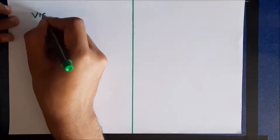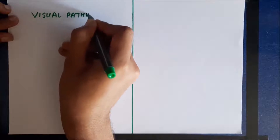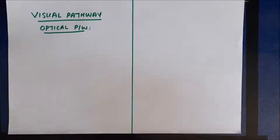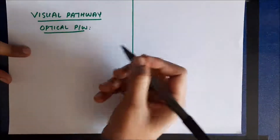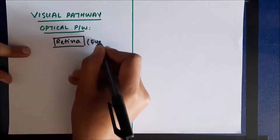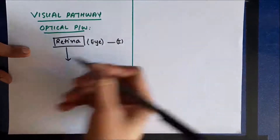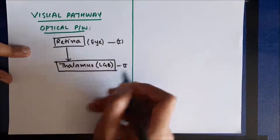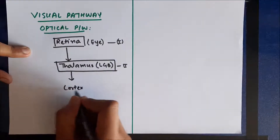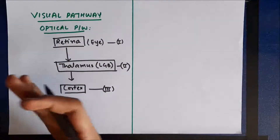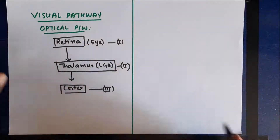In this section we are going to discuss the last topic of physiology of vision, which is known as the visual pathway, also known as the optical pathway. There are three control points in the visual pathway: control point one is present in the retina (the eye), control point two is present in the thalamus which is the lateral geniculate body, and control point three is present in the visual cortex. Based on this pathway we are going to study the detailed visual pathway, starting from the first control point.